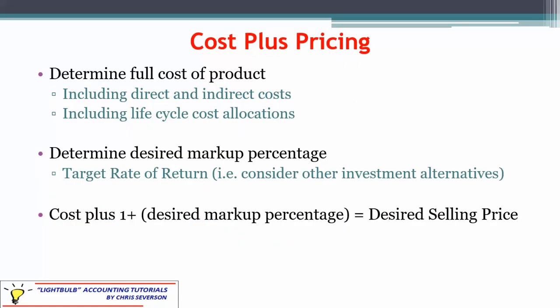With cost-plus pricing in more detail, we want to determine the full cost of the product with direct and indirect costs, including life cycle cost allocations. Research and development is a great example of a starting cost — if you have R&D in year one but the resulting product is going to last five years, it makes sense for managerial accounting to amortize that cost out over five years. We can't do that for financial accounting under US GAAP, but we certainly can do it for internal managerial accounting reports, giving you a better idea of your true profit for each year of the product.